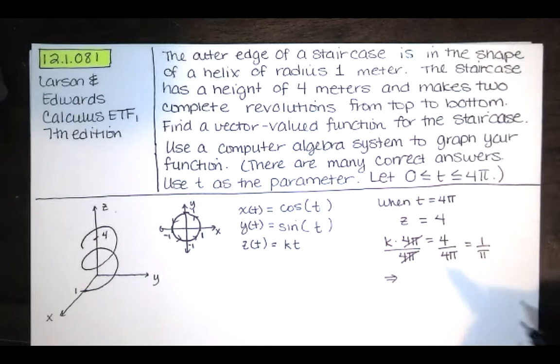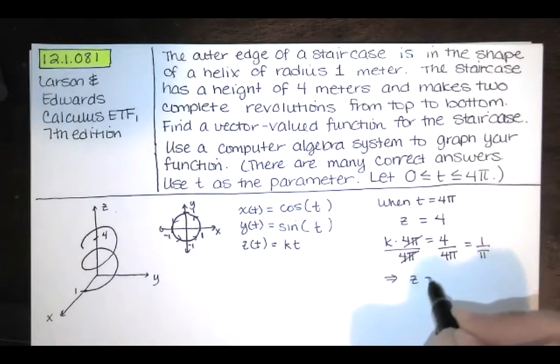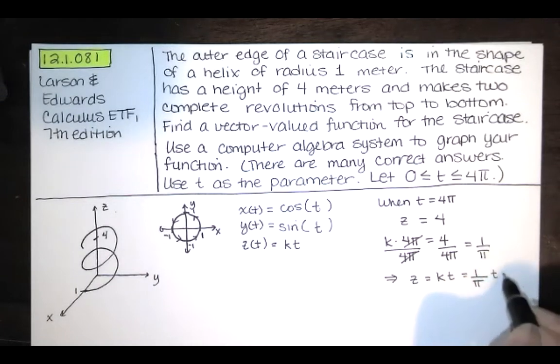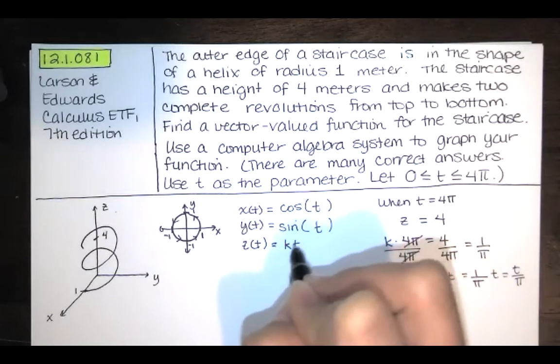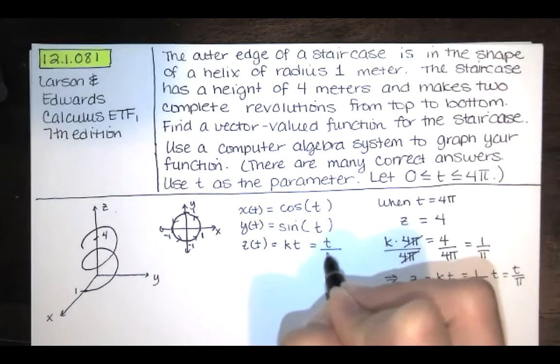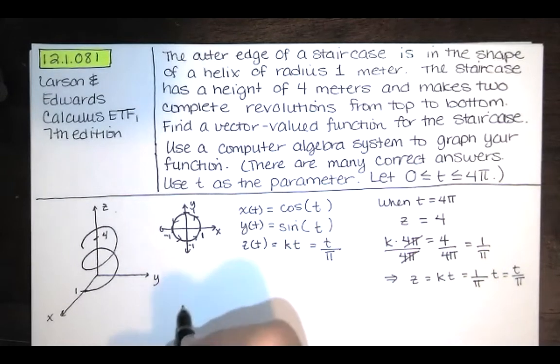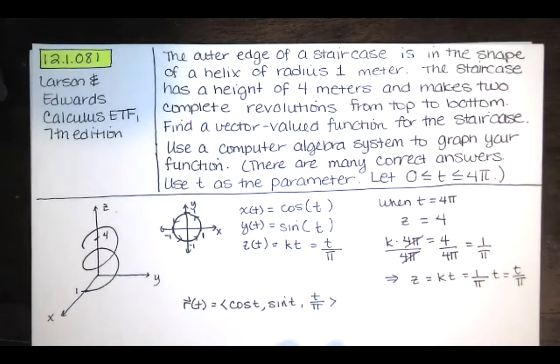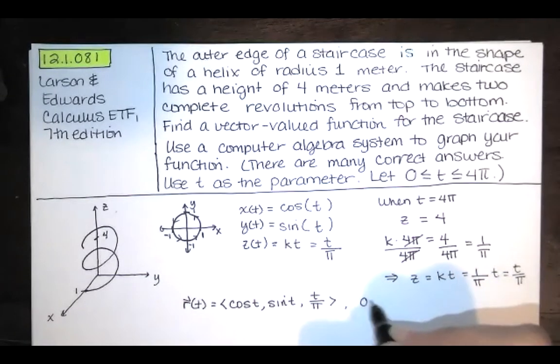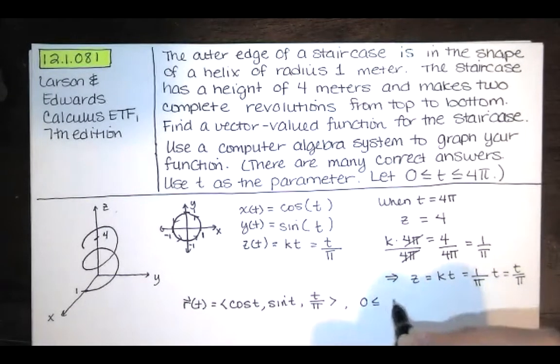So that means that z, which was k times t, can now be written as 1 over π times t, or if you prefer, t over π. So this was, in general, that's what it would have to be. And now we've got this. So when someone asks you for the parametric equations of this helix, this is one set of parametric equations that will work. And this works when t is on the interval from 0 to 4π.